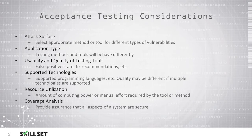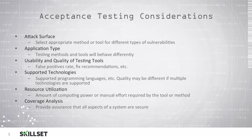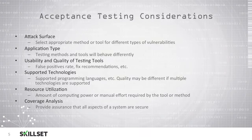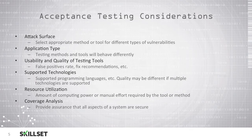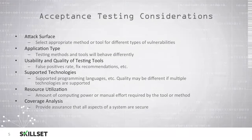There are several considerations to keep in mind when performing acceptance testing. You will need to consider the attack surface and select appropriate tools or methods for testing different types of vulnerabilities. You'll also have to consider the application type, because different methods and tools will behave differently. You'll have to consider the usability and quality of the tools — does your tool have a high false positive rate, or does it offer recommendations for fixing issues? You'll also have to consider supported technologies, since your tool may not work with certain programming languages.